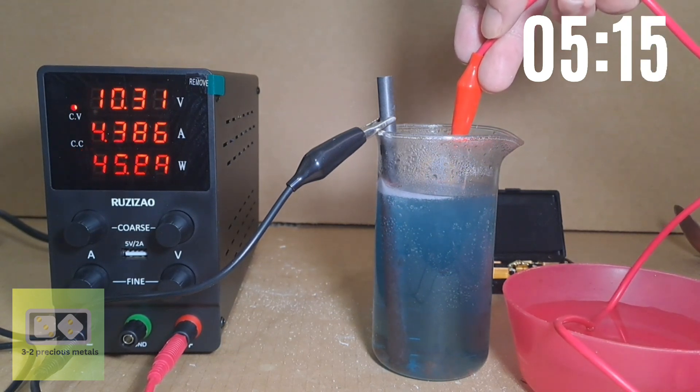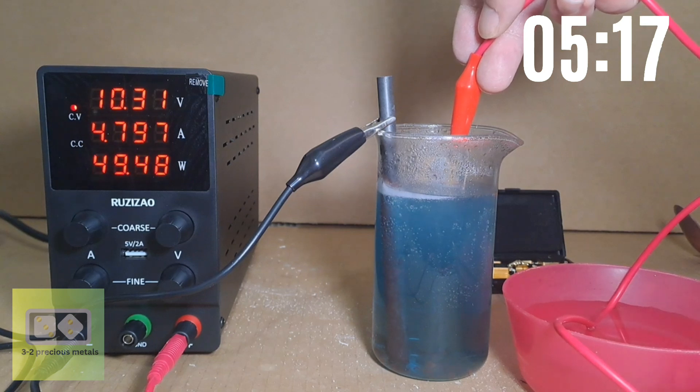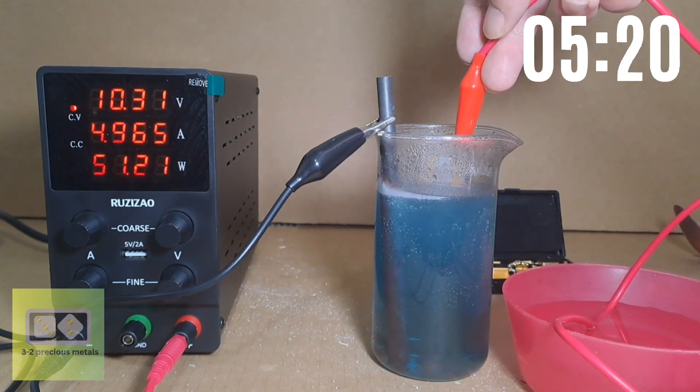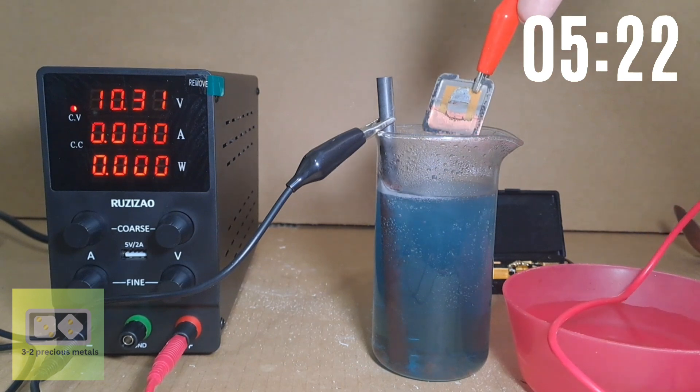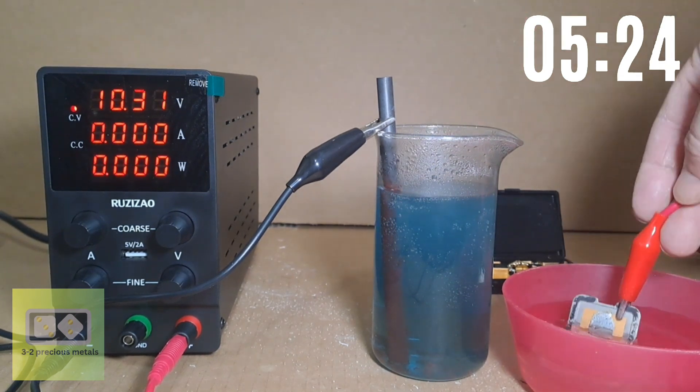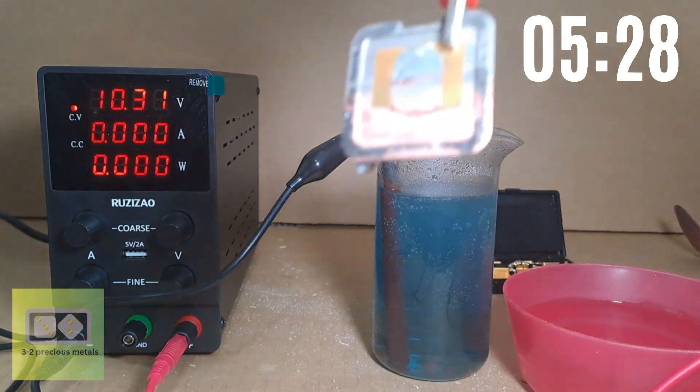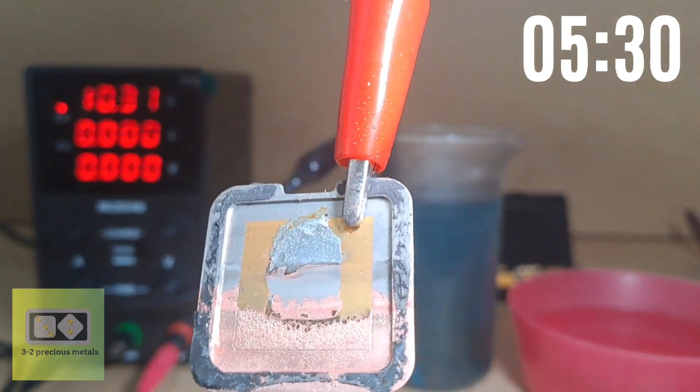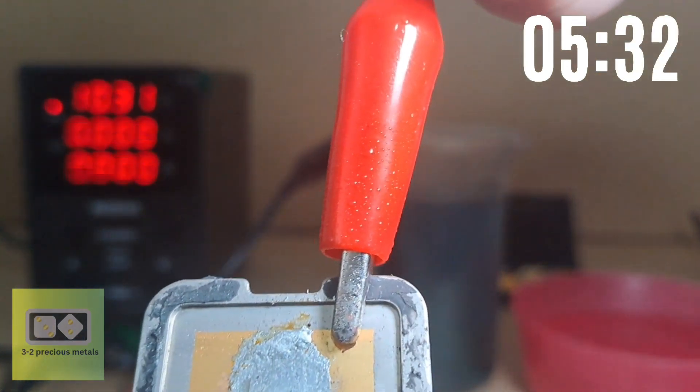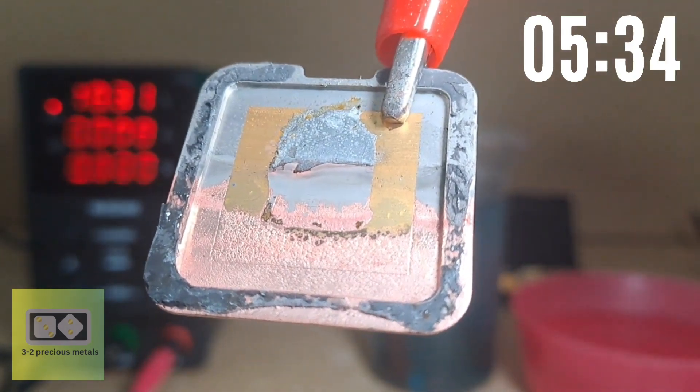Using sulfuric acid, the gold would have been removed long before now, and I would have gotten through a couple of these heat sinks. But we're at five and a half minutes, and we're not even halfway through the first one. I think I'll speed through a little, and you can see how long it actually takes.